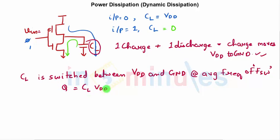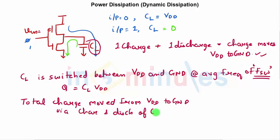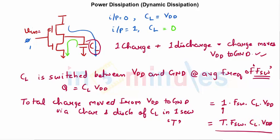The number of times the charge which was equal to C_L times V_DD is moved from V_DD to ground in one second was equal to F_SW times. So the total charge moved from V_DD to ground via charging and discharging of C_L in one second would be nothing but one times F_SW times C_L times V_DD. If I assume for time T, this will change to T times F_SW times C_L times V_DD. So we can say that if it's time T, it's going to be nothing but T into the whole term.